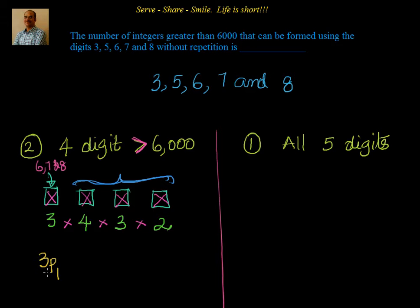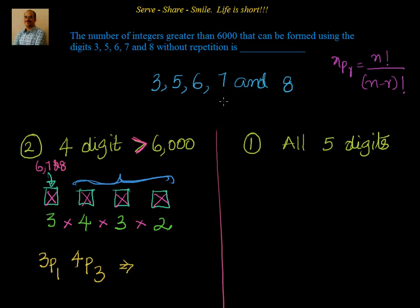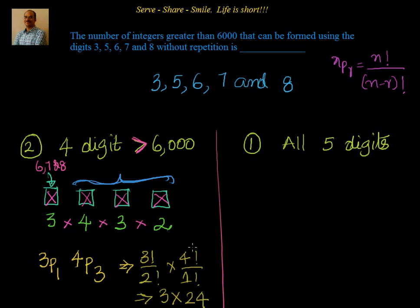We can express this using permutations: 3P1 for the first slot (choosing one from 6, 7, or 8), and 4P3 for the remaining three slots. Using the formula NPR = N! / (N−R)!, we get 3P1 × 4P3 = (3!/2!) × (4!/1!) = 3 × 24 = 72. So 72 four-digit integers greater than 6000 can be formed.